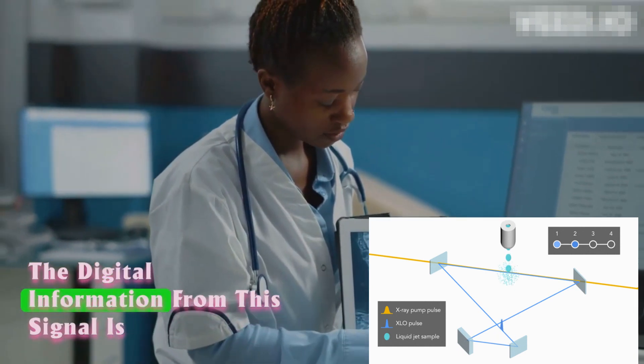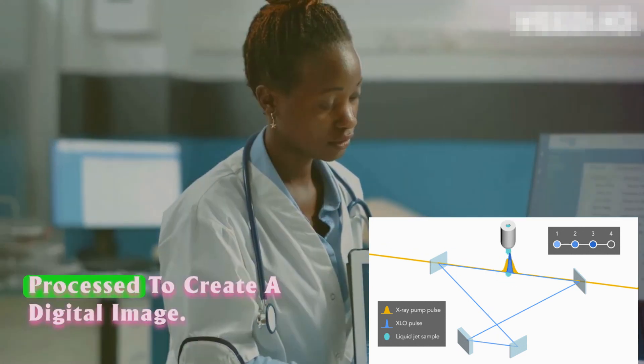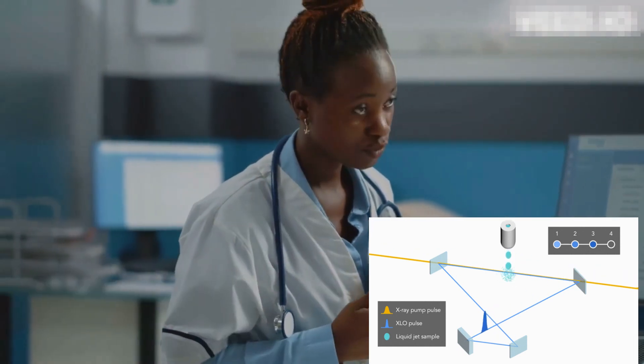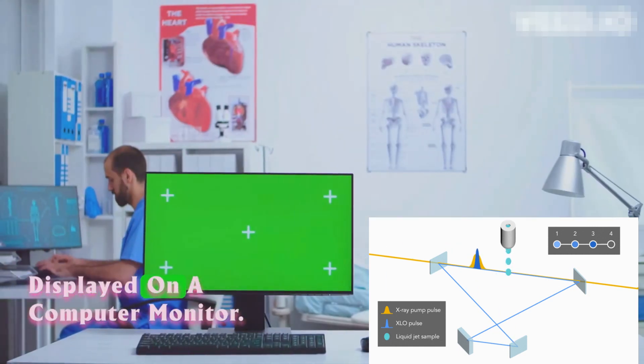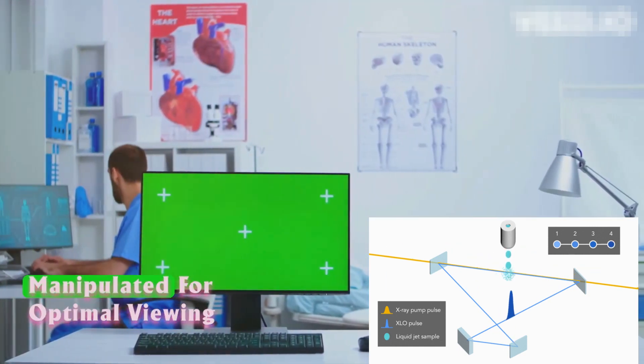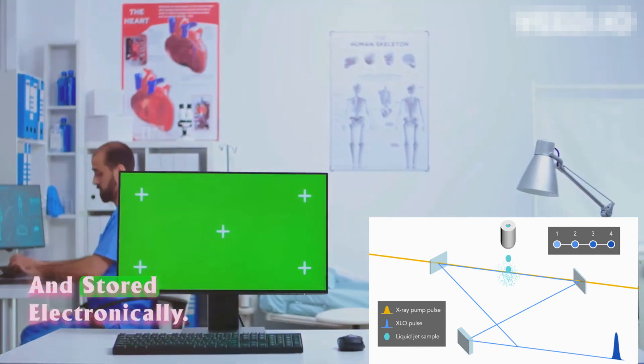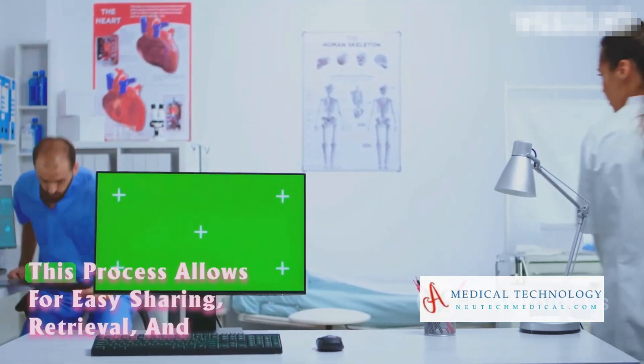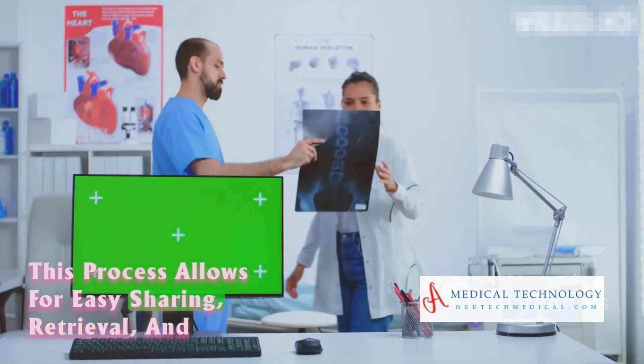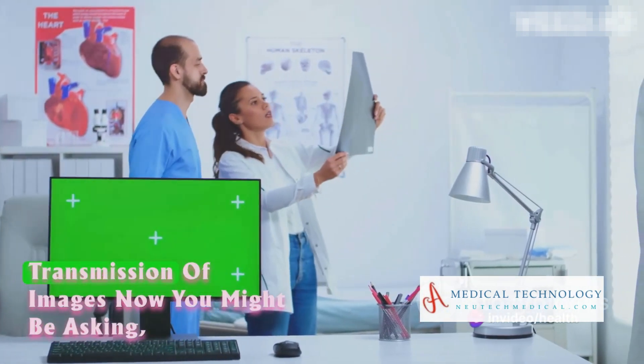The digital information from this signal is processed to create a digital image. Finally, the digital image can be displayed on a computer monitor, manipulated for optimal viewing, and stored electronically. This process allows for easy sharing, retrieval, and transmission of images.